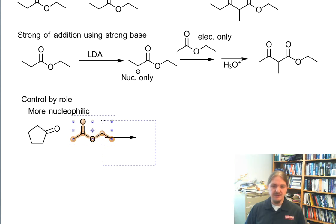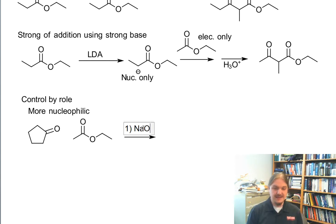So you could react cyclopentanone and ethyl acetate in a Claisen-type reaction, and you could count on the ketone being a nucleophile and the ester being an electrophile.